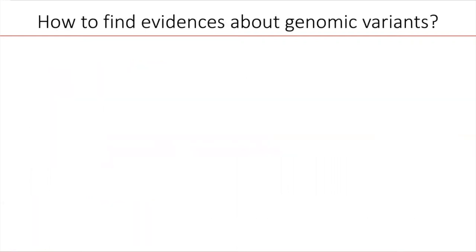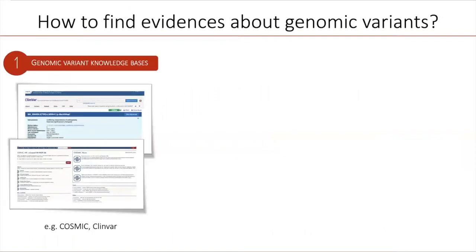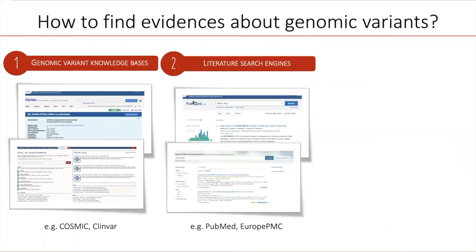So how to find evidences about genomic variants? The curator can use knowledge bases such as Cosmic and ClinVar, which are valuable sources of information. The curator will find high quality information there, but the coverage is quite limited and information about rare variants might be missing. In such case, the curator will need to access the literature, and it can be done by using standard search engines like PubMed and Europe PMC.